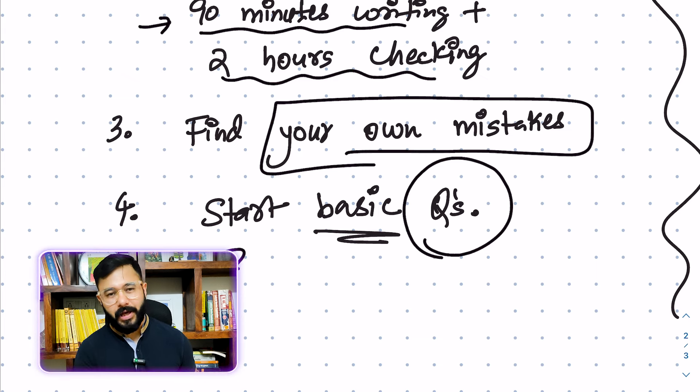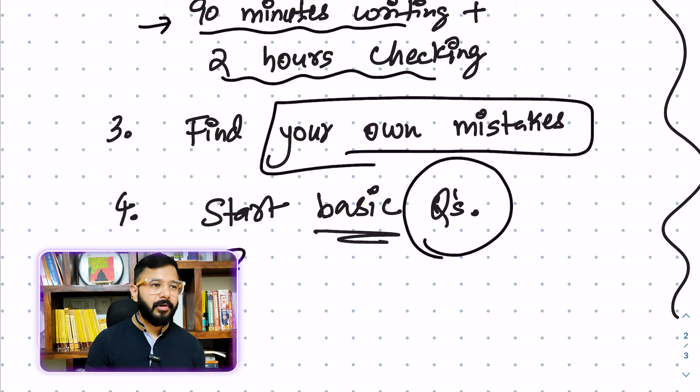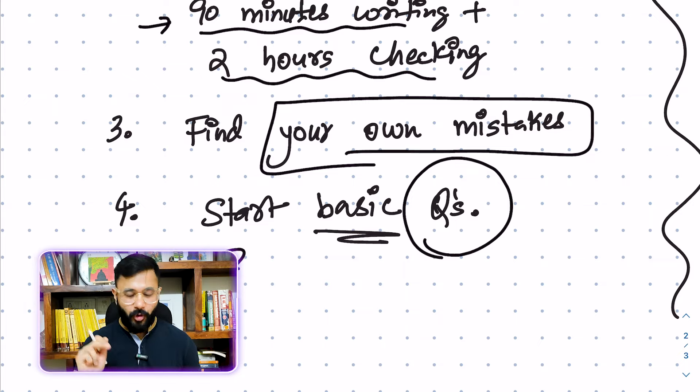Something as simple as what is UPI? Something as simple as what is BBPS, Bharat Bill Payment System? Something as simple as what is Maslow's Need Hierarchy Theory? Something as simple as what are the major reasons behind economic reforms of 1991? Simple things. Start basic. Automatically, in 1-2 weeks, your graph is going to go up like this.